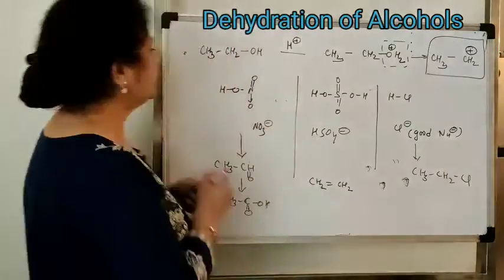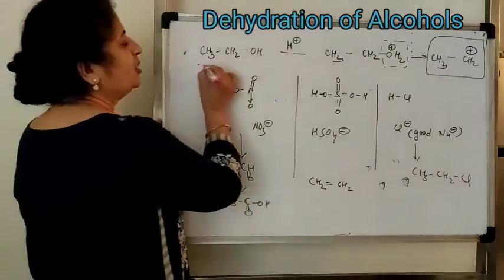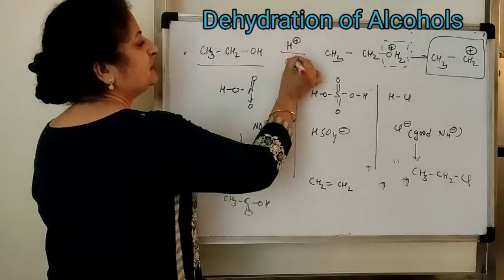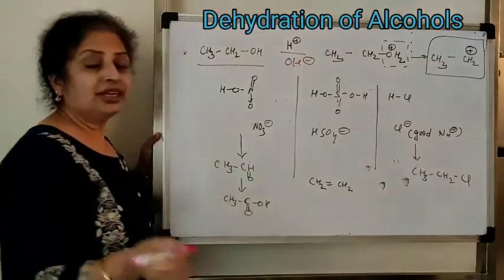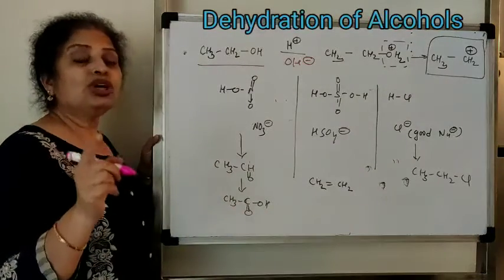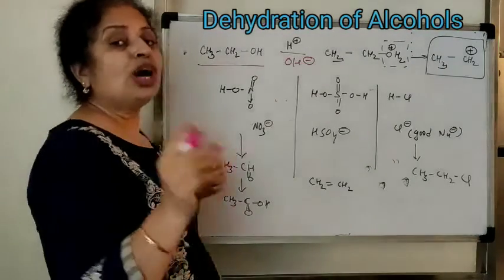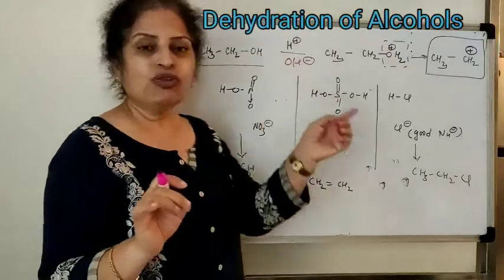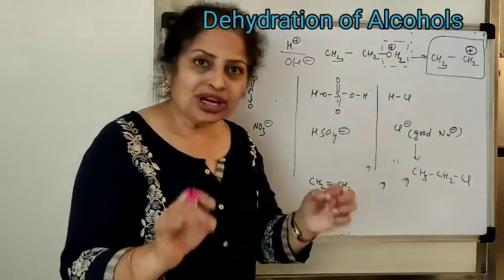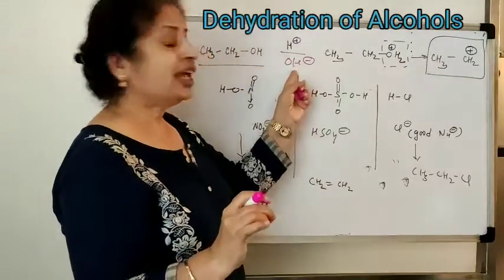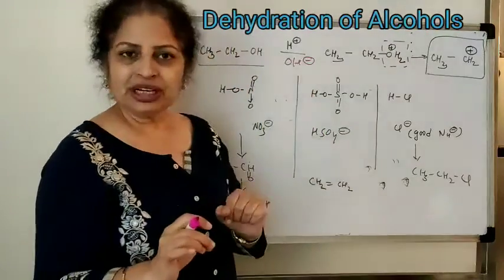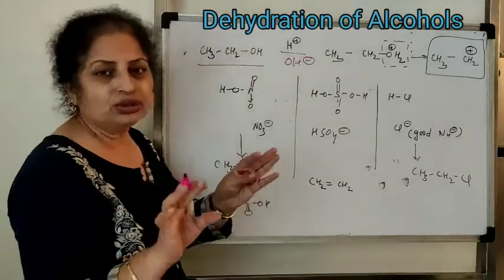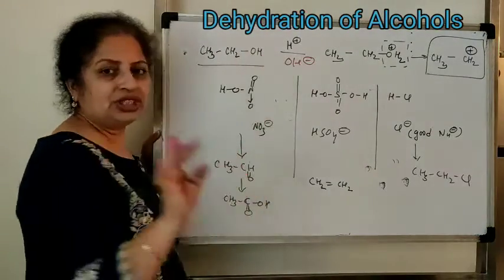First of all, this is an alcohol molecule. If you keep a basic medium — OH⁻ — because OH⁻ is a poor leaving group, this leaving group is poor, and when you keep alkaline medium, the alcohol will remain alcohol. So it will be difficult to eliminate the OH group.